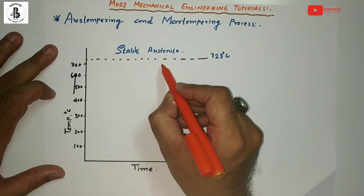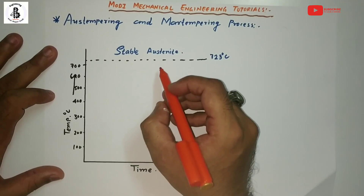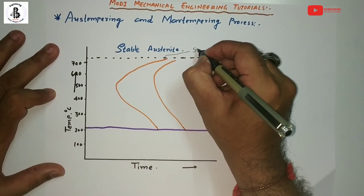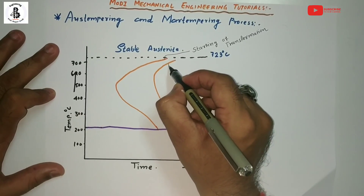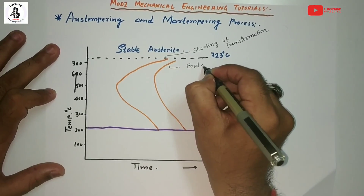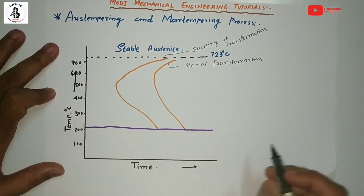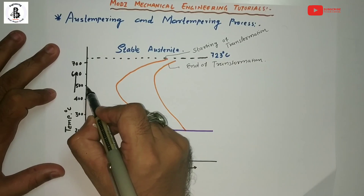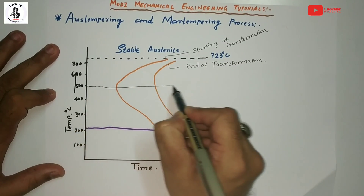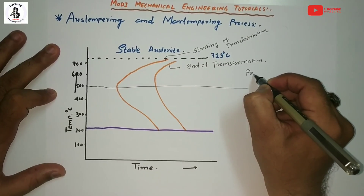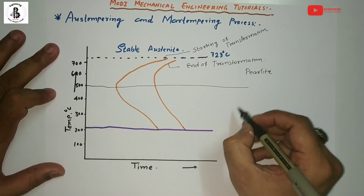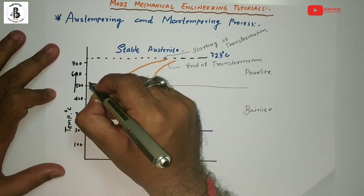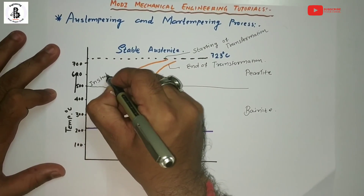From the TTT diagram there are two lines — the first line represents the starting point of the transformation, and the second line represents the end point of the transformation. This region here is pearlite, this region is bainite, and on this side it will be the unstable austenite.